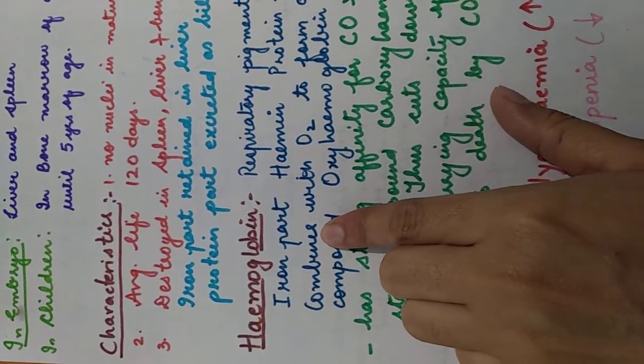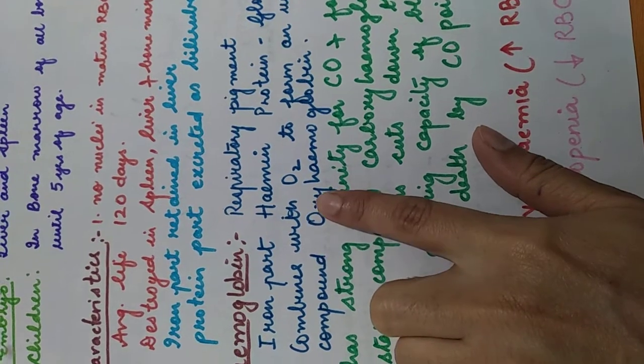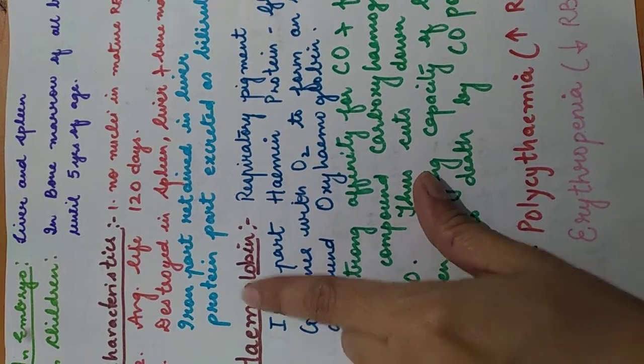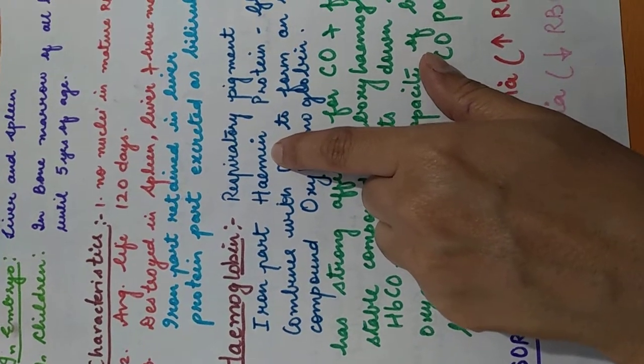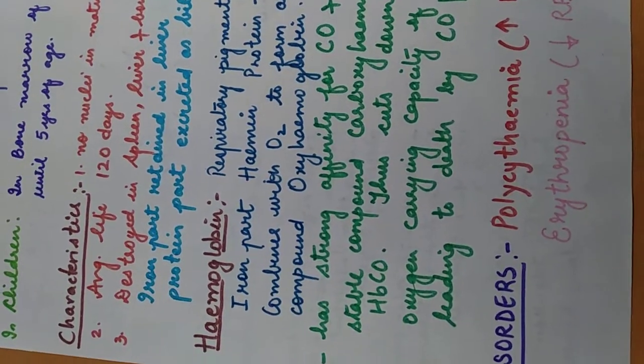Now, important component of RBCs is hemoglobin, which is also known as respiratory pigment. In hemoglobin, this heme part is the iron part, hemin, we call it hemin, and the protein part is this globin. Globin is the protein part of hemoglobin.